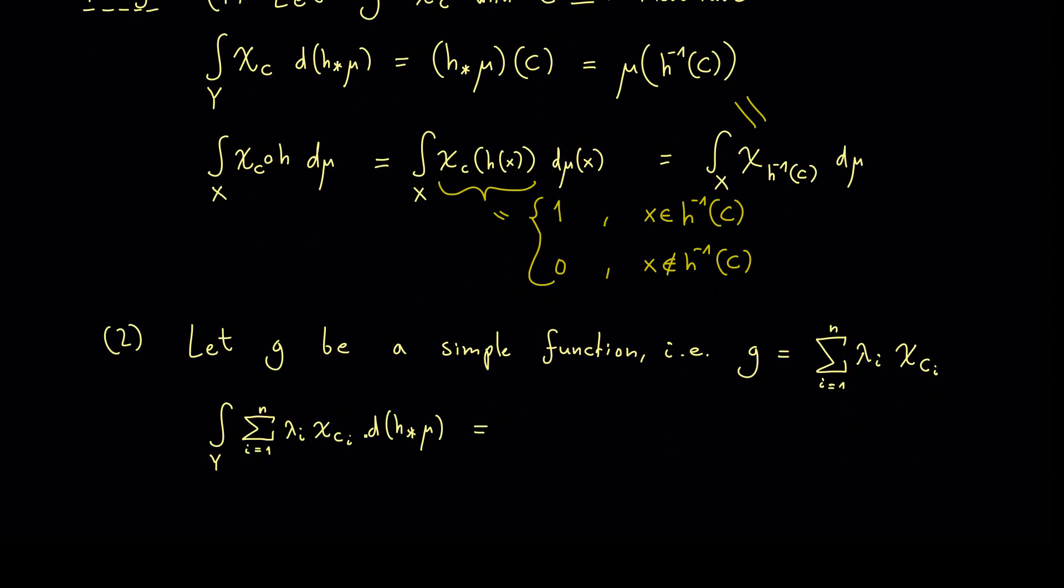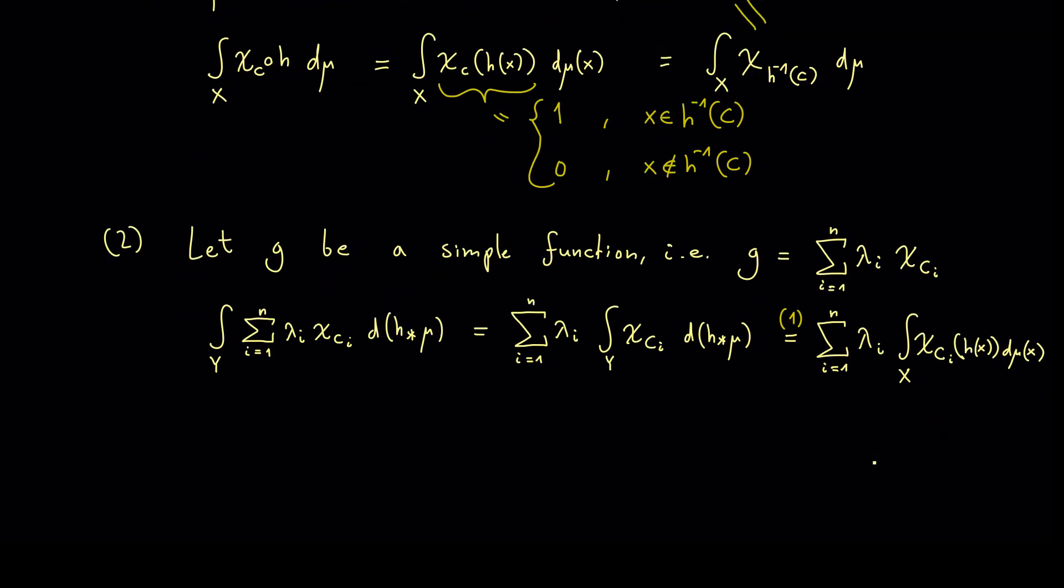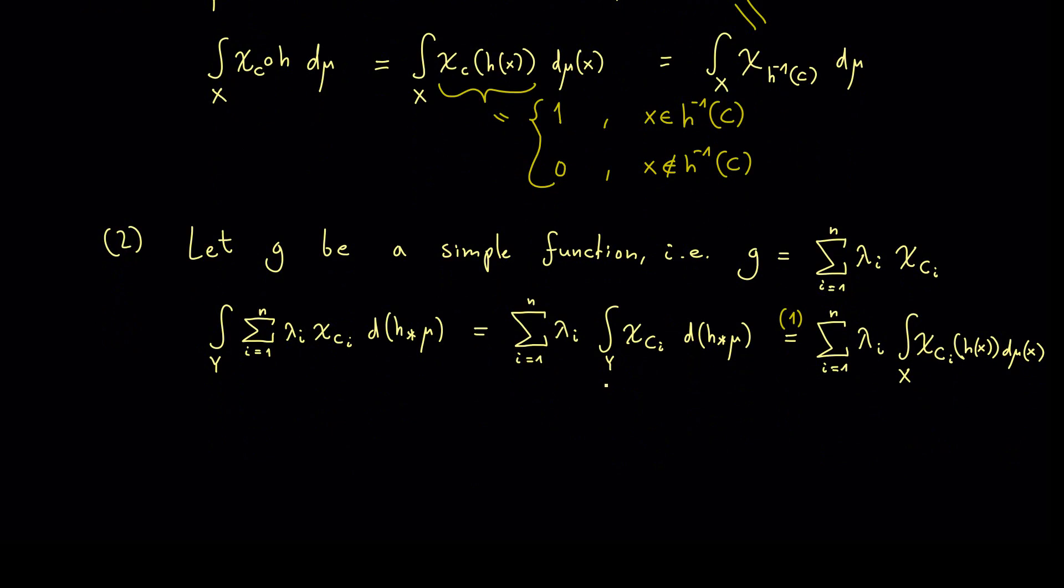However for the sake of completeness let's write that down. So this is the left hand side so we can pull out the whole sum and also the coefficients lambda i. This is just the linearity of the Lebesgue integral. And for this integral here we can just use our first case. This means that we have here the integration over X and the characteristic function composition with h so h(x) and then d mu(x). And of course now we want to push the sum inside the integral again.